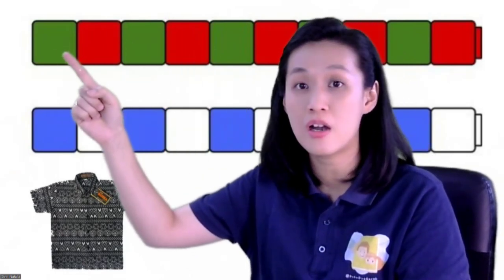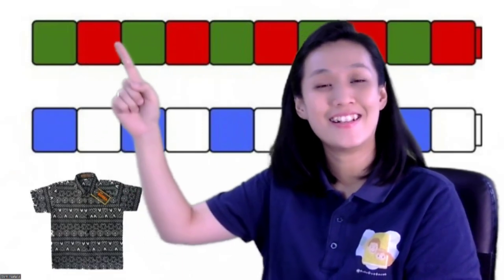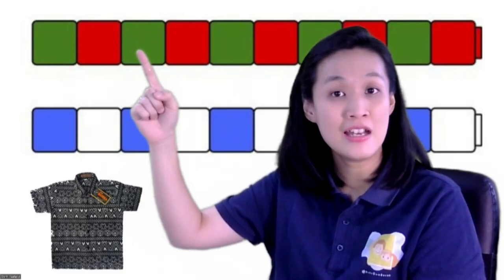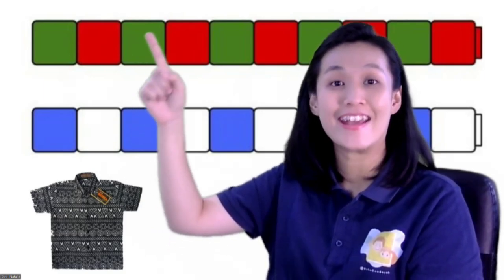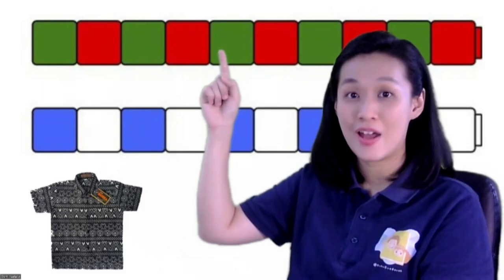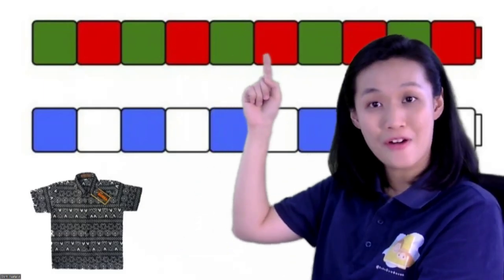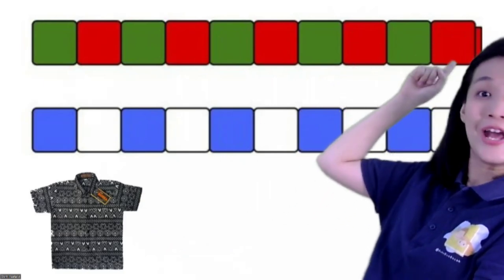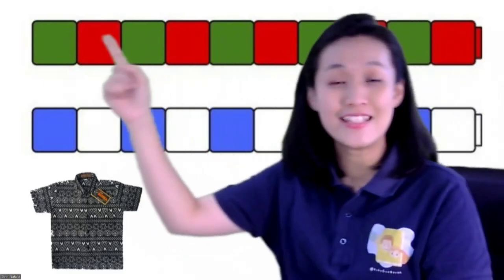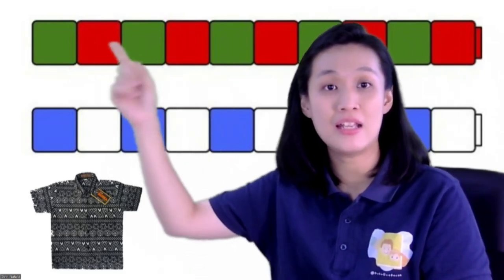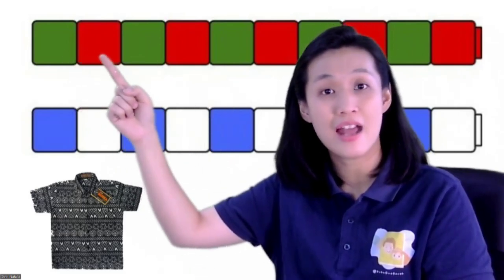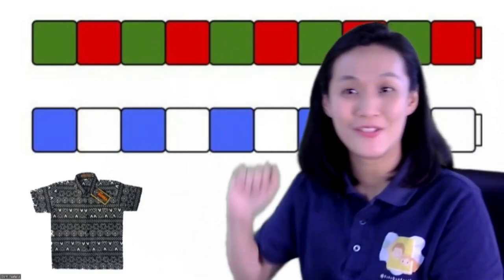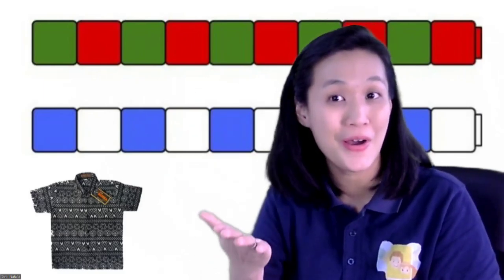The first color is green. The second color is red. And back to green again. Red, green, red, green, red, green, red. This is the pattern. The pattern is green, red, and they go over and over again. This is what we call a pattern.